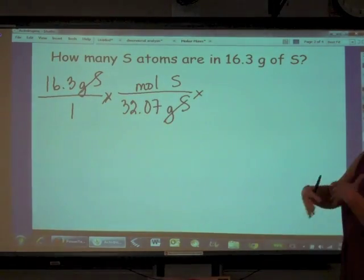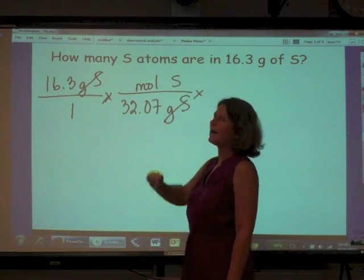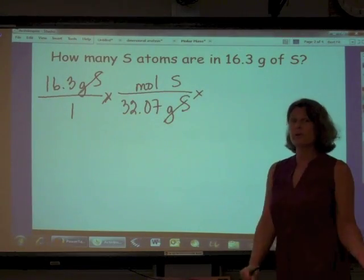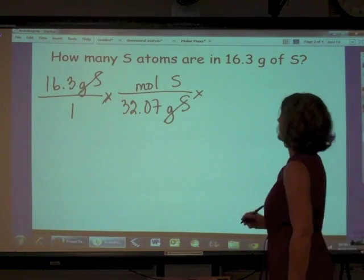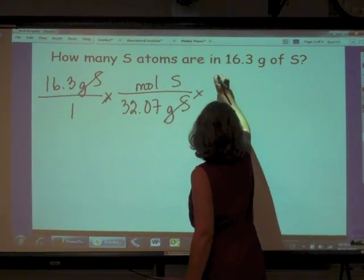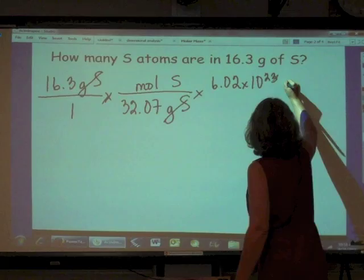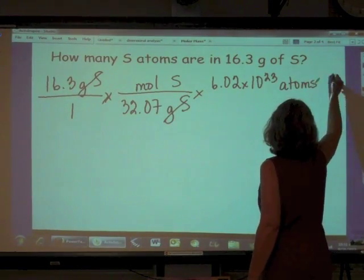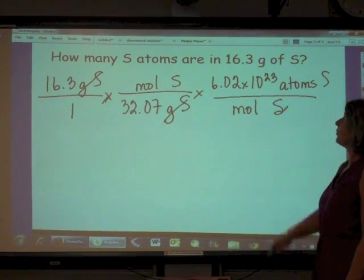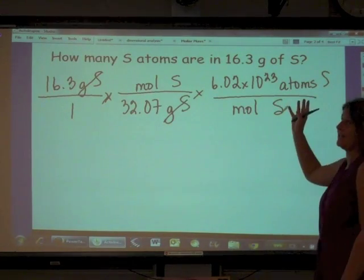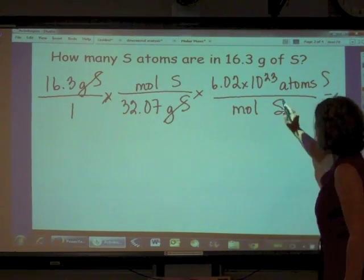We don't want to know how many moles of sulfur this represents. We want to know how many atoms of sulfur this represents. So now we're going to use Avogadro's number to convert moles of sulfur into atoms of sulfur. We know that there are 6.02 times 10 to the 23rd atoms of sulfur for every mole of sulfur, because of course there's 6.02 times 10 to the 23rd atoms of anything per mole of that thing. My moles will cancel.